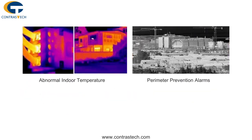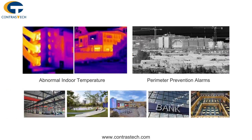LWIR cameras can also be used for abnormal indoor temperature detection and perimeter prevention alarms, in places such as factories, parks, shopping malls, banks, libraries, and other locations.